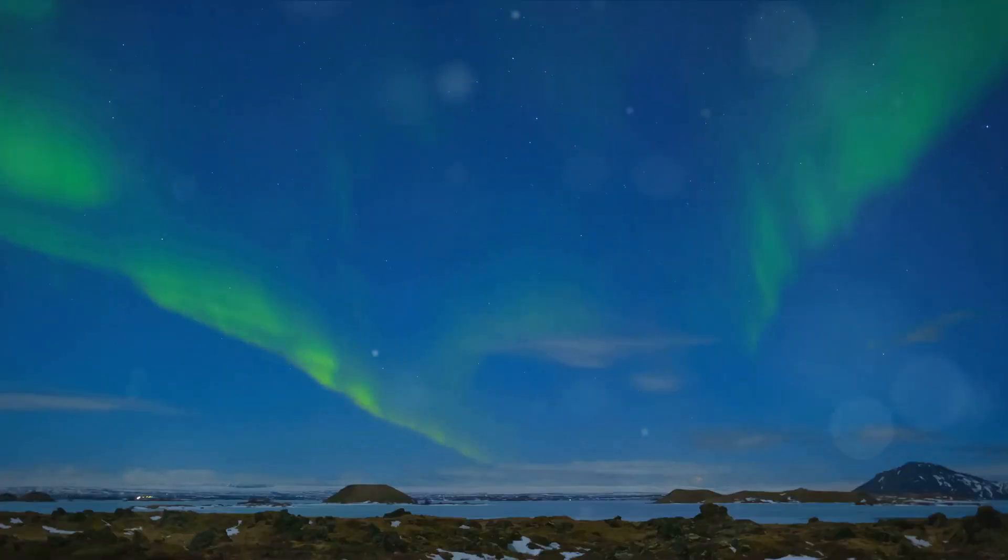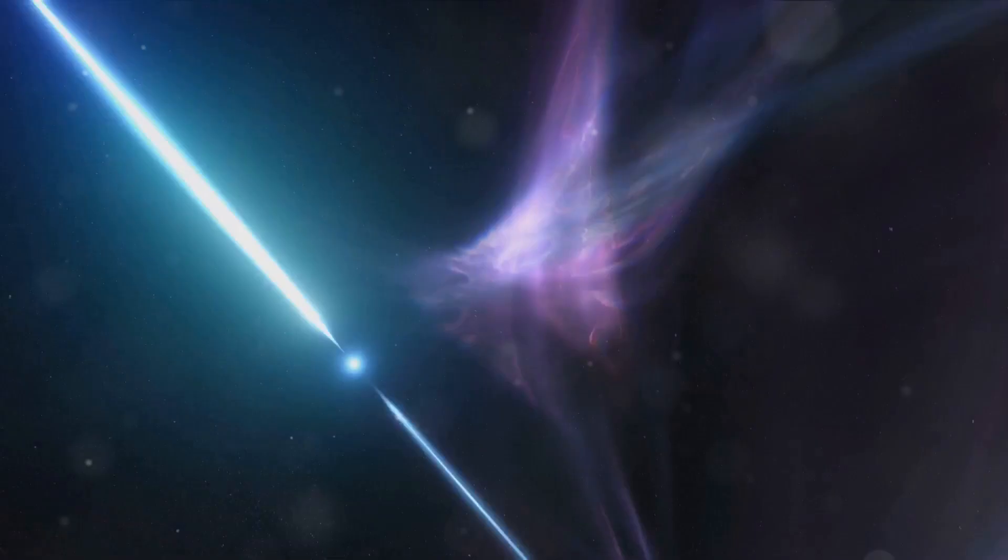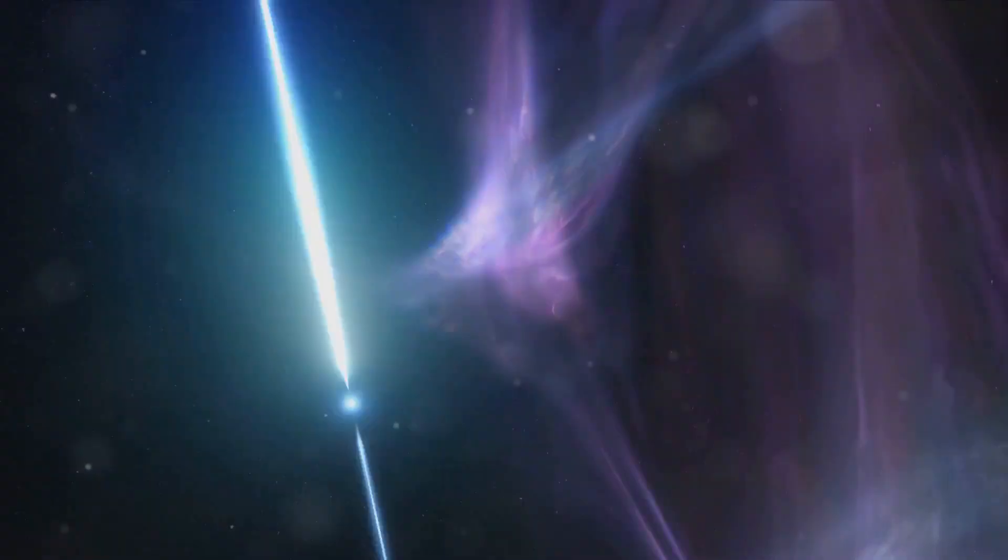By comparison, the typical energy of an electron in the polar aurora is 40,000 electron volts. An ultra-high-energy cosmic ray carries tens of millions of times more energy than any human-made particle accelerator, such as the Large Hadron Collider, the most powerful accelerator ever built.